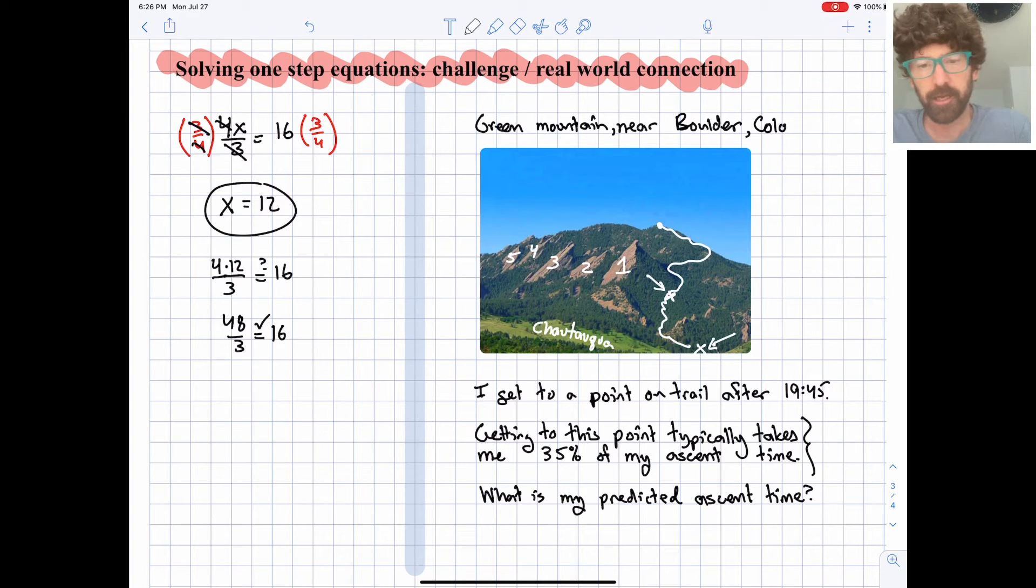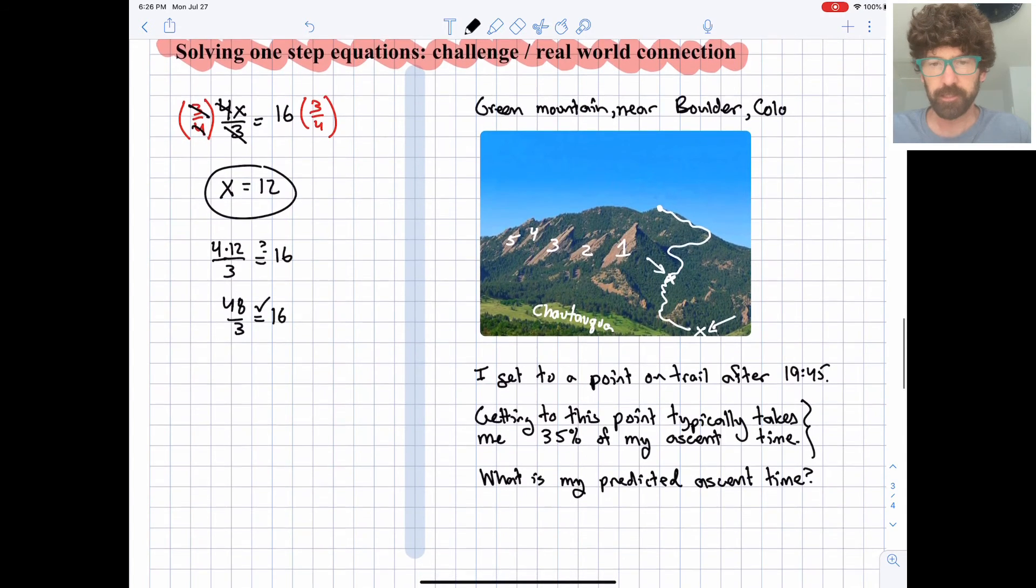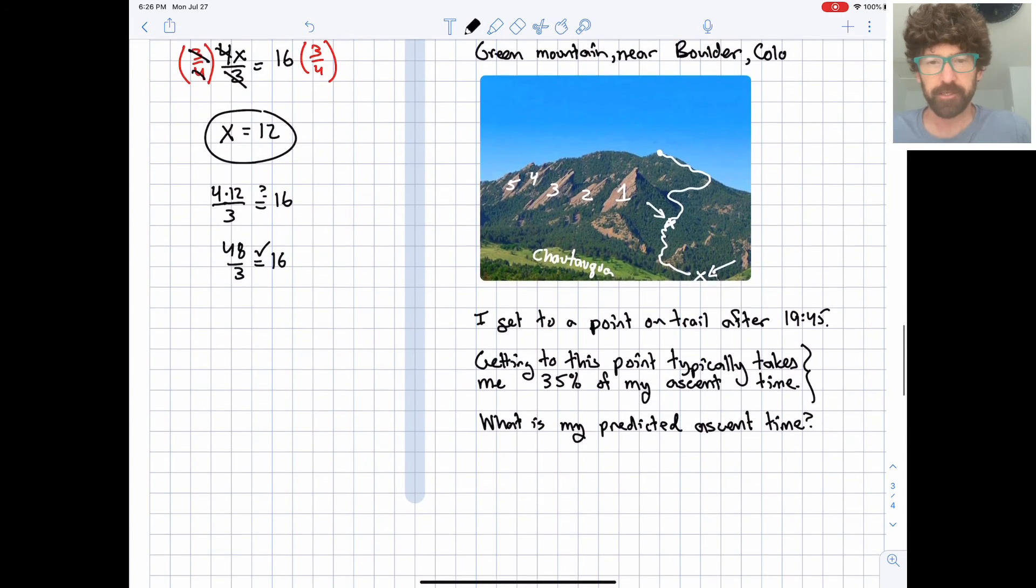And on one particular day, just recently, I timed myself and I got to that spot on the trail after 19 minutes and 45 seconds of going up Green. And I was curious, how could I use that information to predict my total ascent time? So let's do a little bit of math here to try to solve this problem.